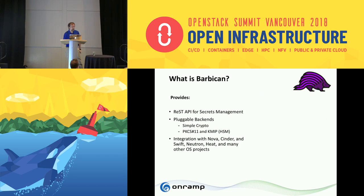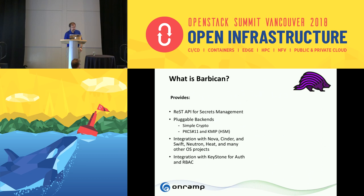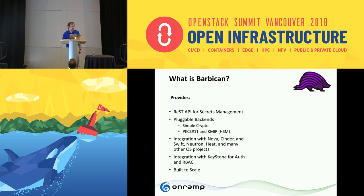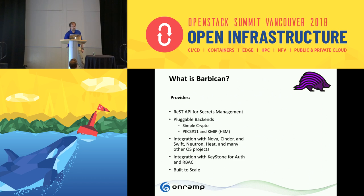Barbican provides integration with Nova, Cinder, Swift, and many other OpenStack projects. It also integrates with Keystone for authentication and role-based access control. Like many other OpenStack projects, it is built to scale — you can horizontally scale out your workers and API nodes to very large sizes.